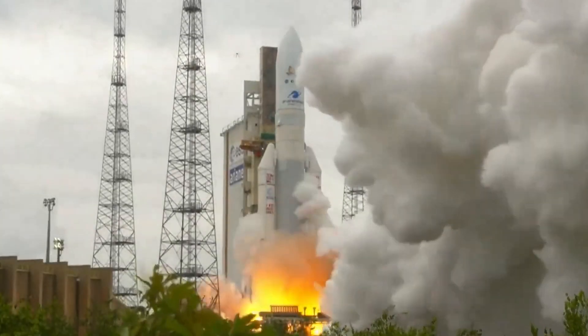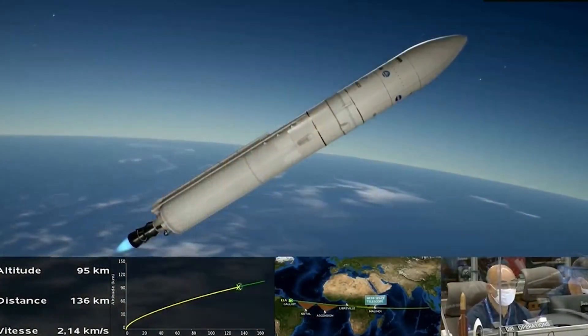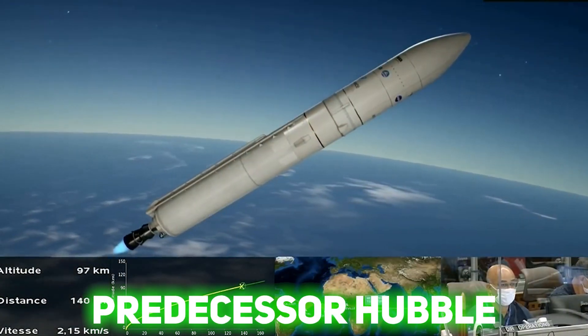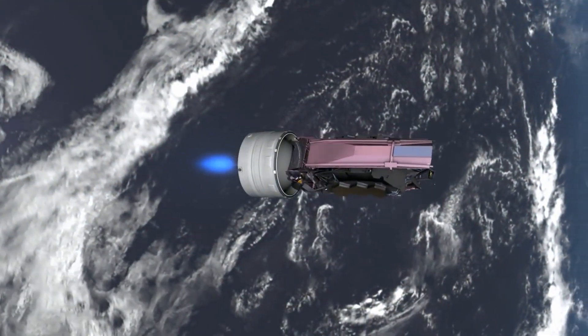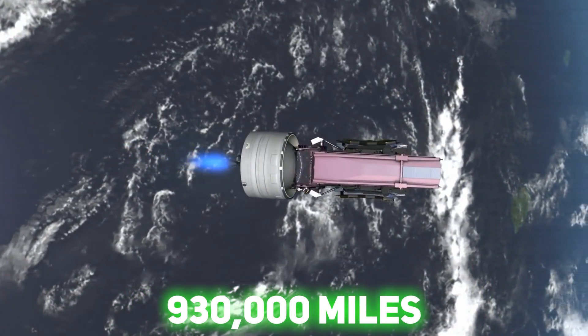Due to launch later this year, the James Webb Space Telescope will have a wider spectrum view than its predecessor Hubble, and operate further out from Earth in a solar orbit 930,000 miles from Earth.